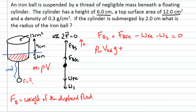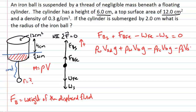Similarly, the buoyant force for the ball equals the density of water times the volume of the ball times g. The weight force of the ball is the density of iron times the volume of the ball times g. And the weight force of the styrofoam is the density of the styrofoam times the whole volume of the styrofoam times g. All of these terms must add up to zero.